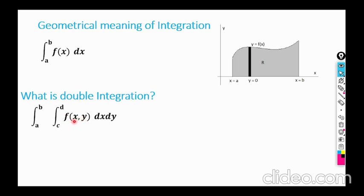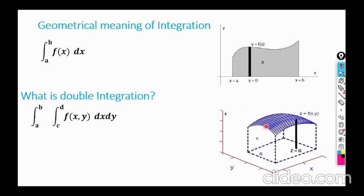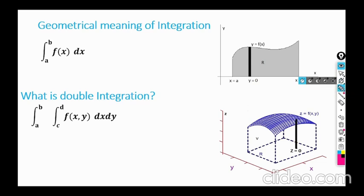A relation between three variables represents a surface, just as a relation between two variables represents a curve y = f(x). For z = f(x,y), suppose this is the top surface. The volume under the surface z = f(x,y) over the region bounded by x = c, x = d, y = a, y = b — drawing these four straight lines gives a rectangular base. This double integration is approximated by the sum of the volumes of cuboids, where a cuboid is a solid with rectangular surfaces.